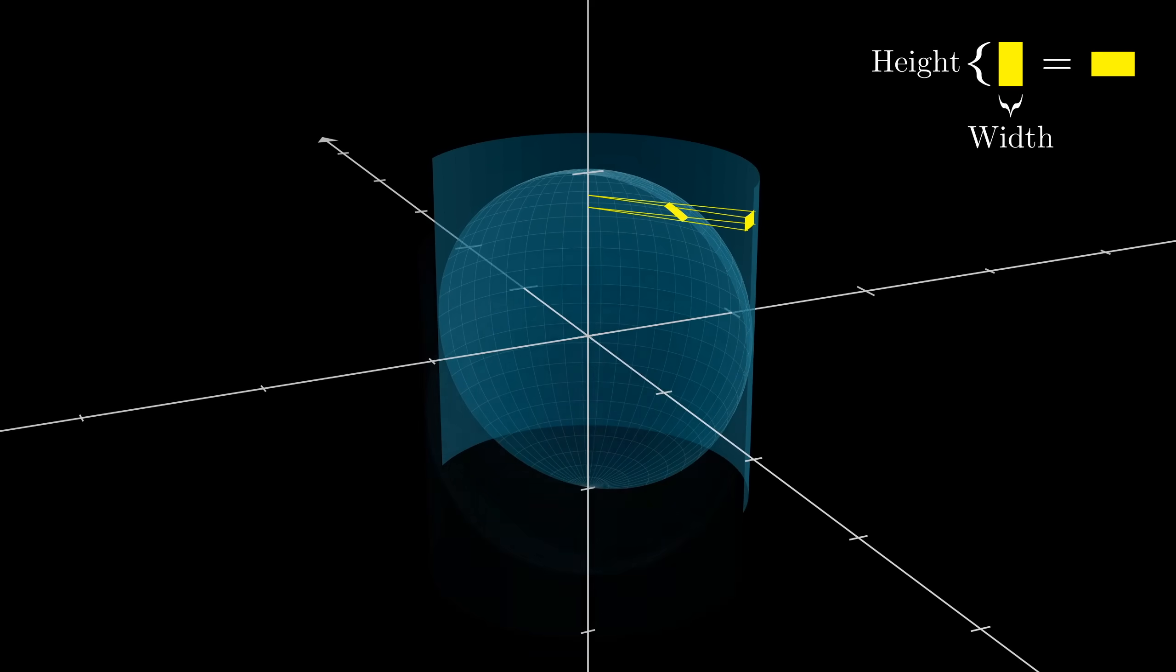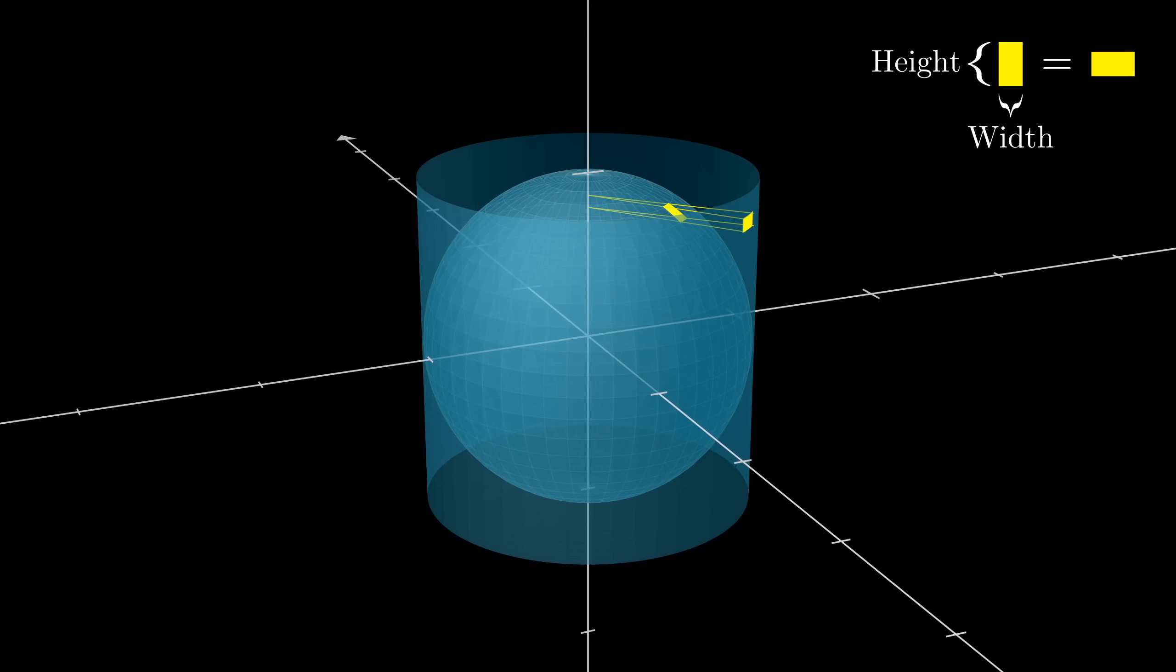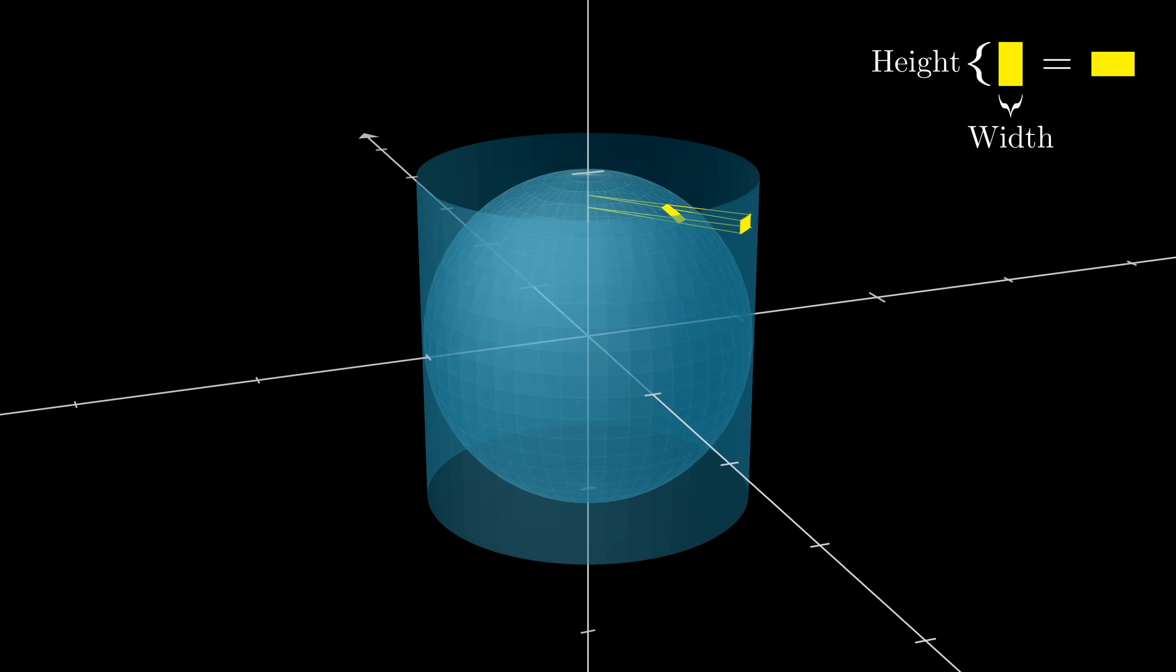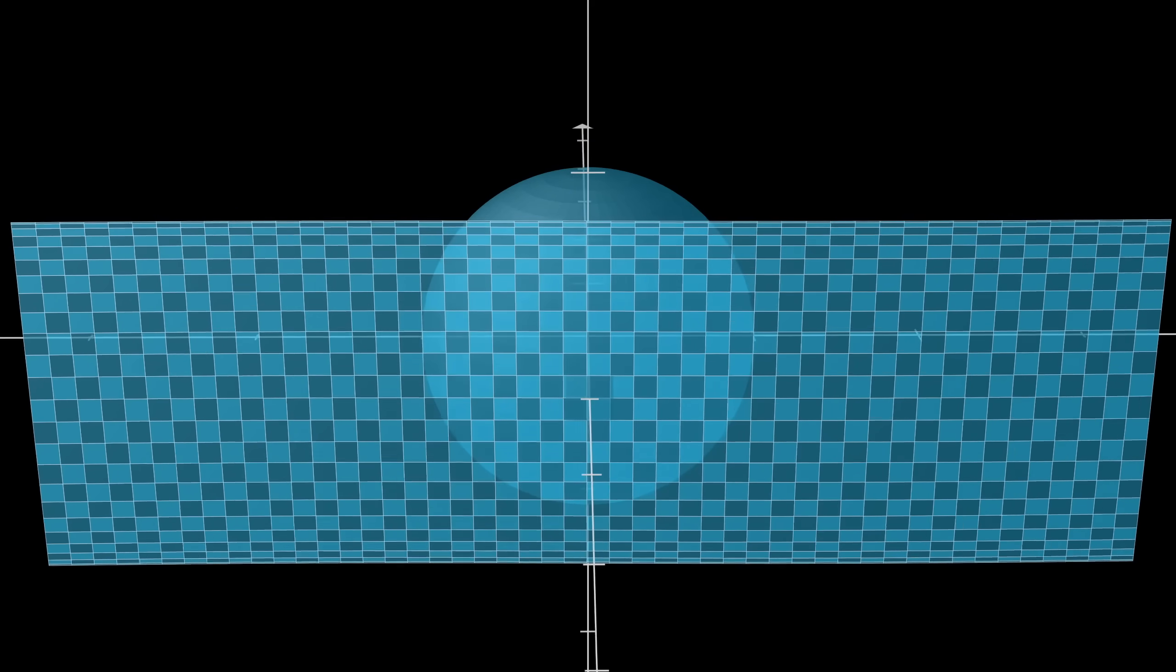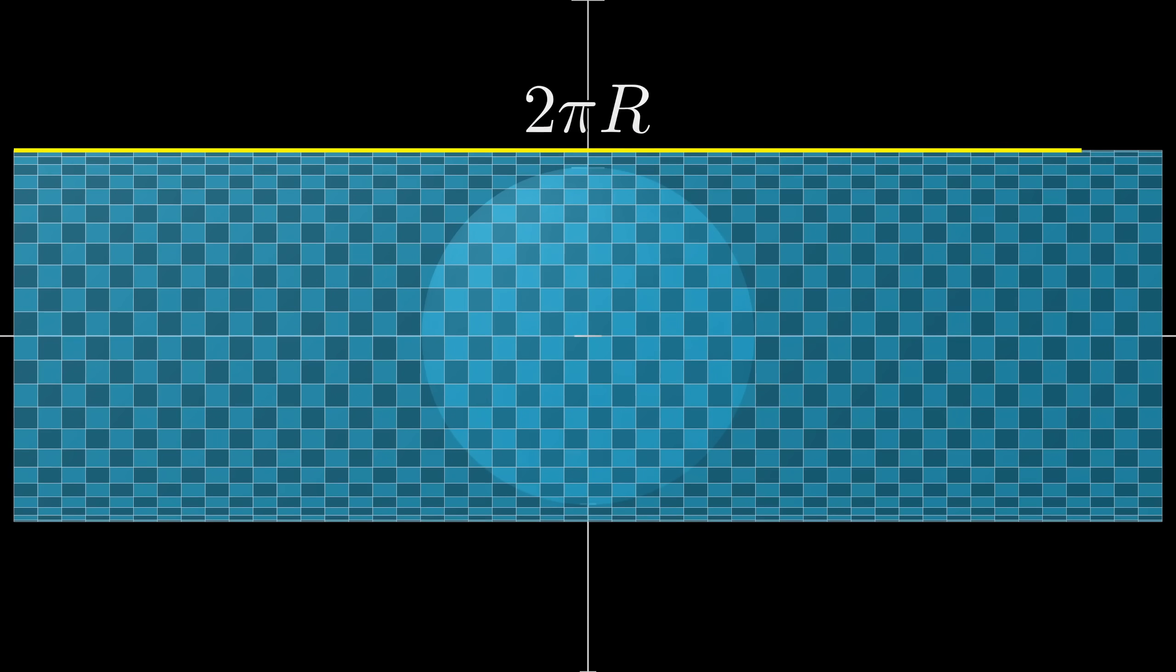It will turn out that these two effects, of stretching the width and squishing the height, cancel each other out perfectly. Already, as a rough sketch, wouldn't you agree that this is a very pretty way of reasoning?